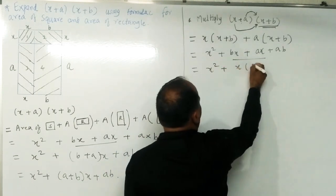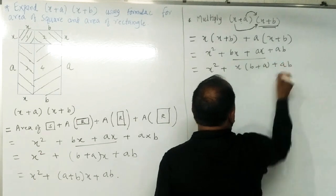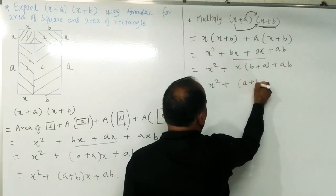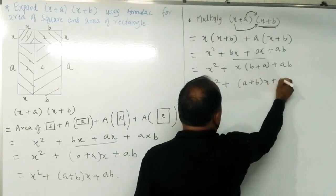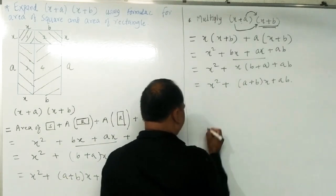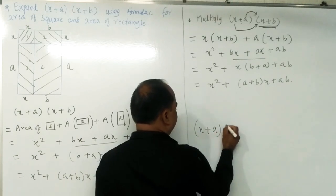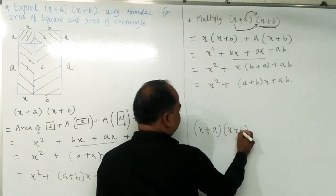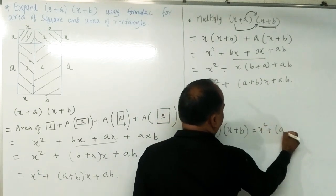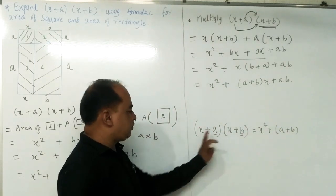So we have x squared, and here x is common in bx and ax, so we factor out x to get x squared plus (b + a)x plus ab. That is x squared plus (a + b)x plus ab. This is the final formula derived by multiplying the binomials.